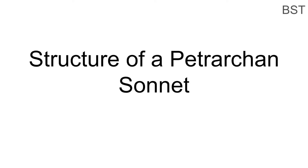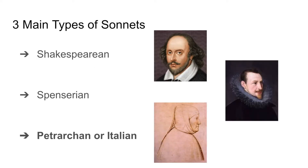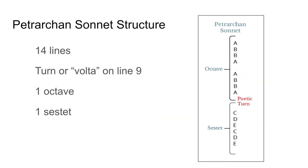Hello, I'm a student tutor, and today we're going to be talking about the structure of a Petrarchan sonnet. So there are three main types of sonnets: Shakespearean, Spenserian, and Petrarchan, which is also known as an Italian sonnet. Today we're just going to be focusing on that third one.